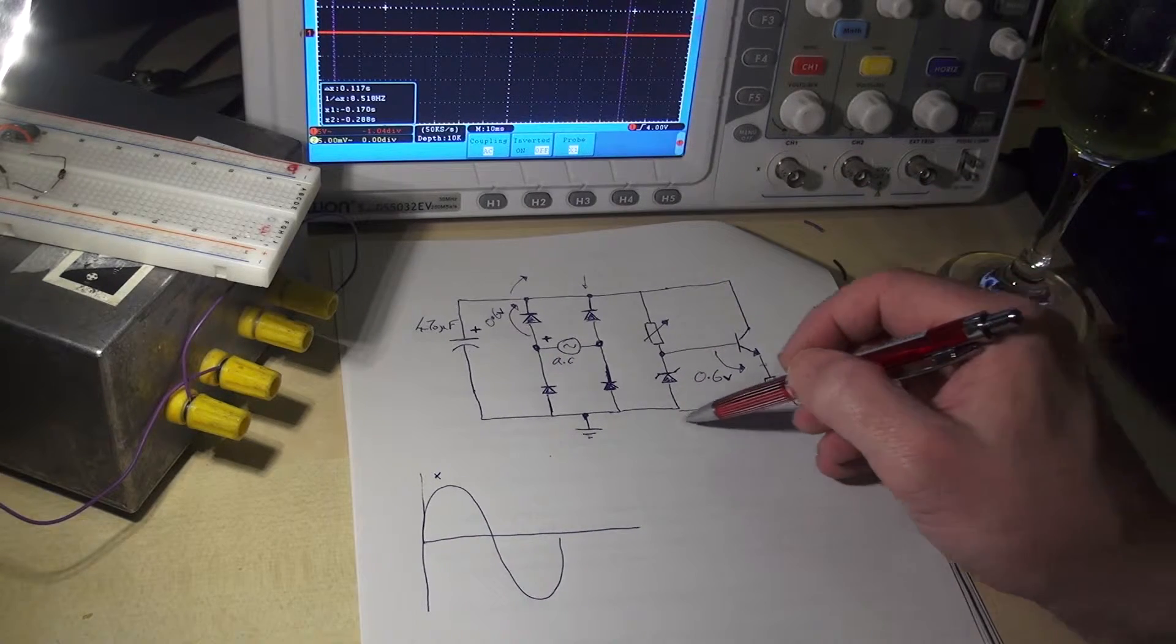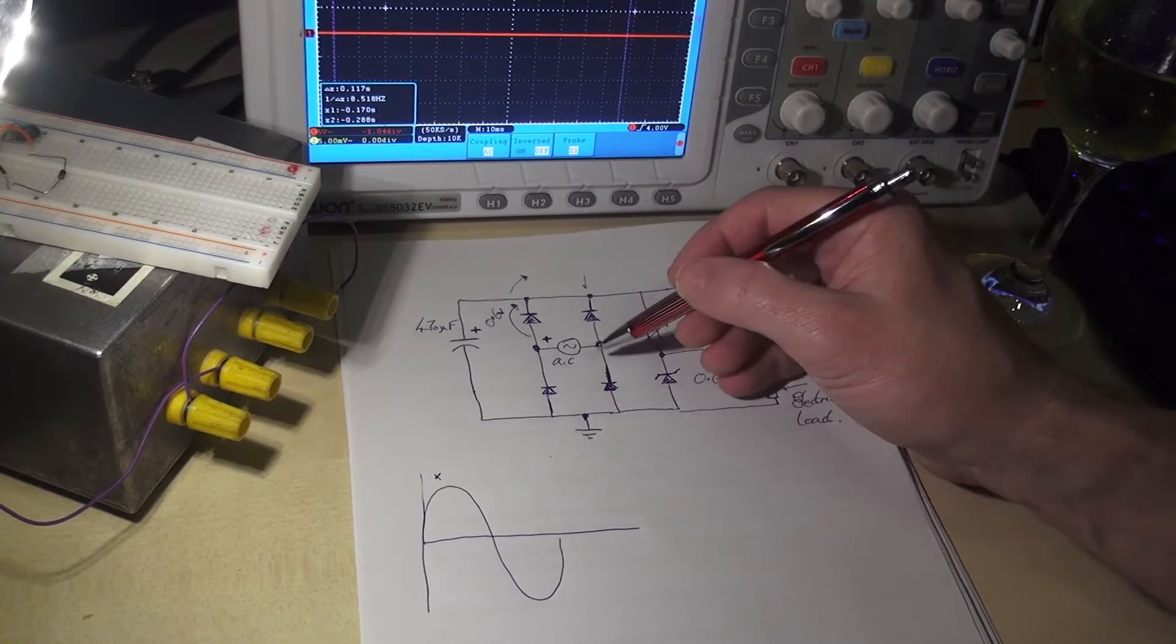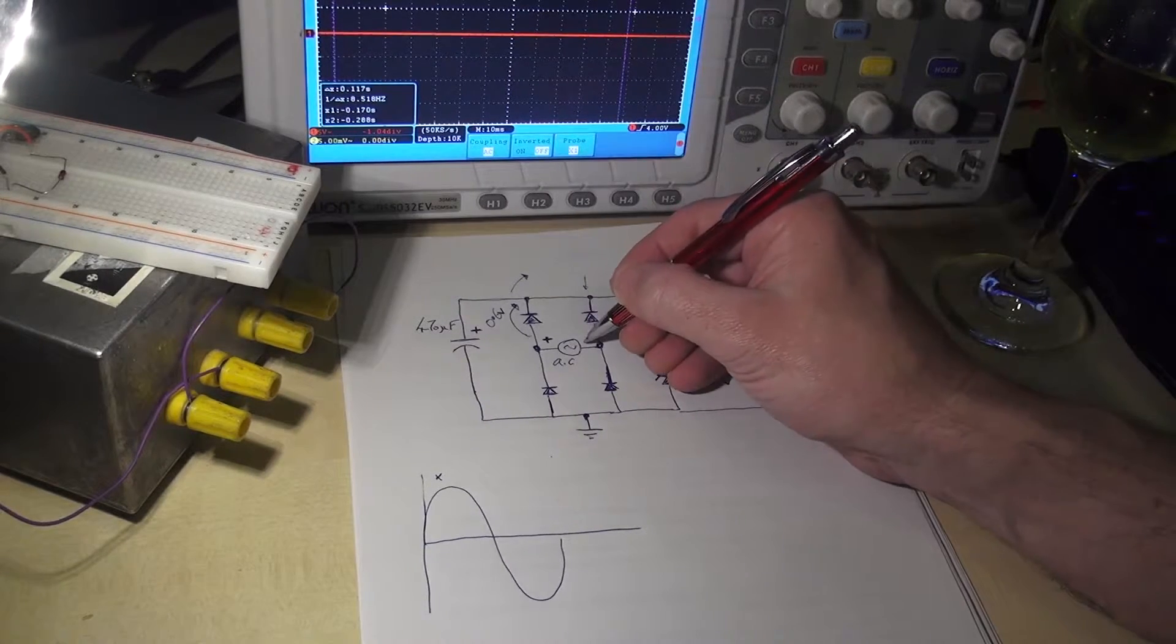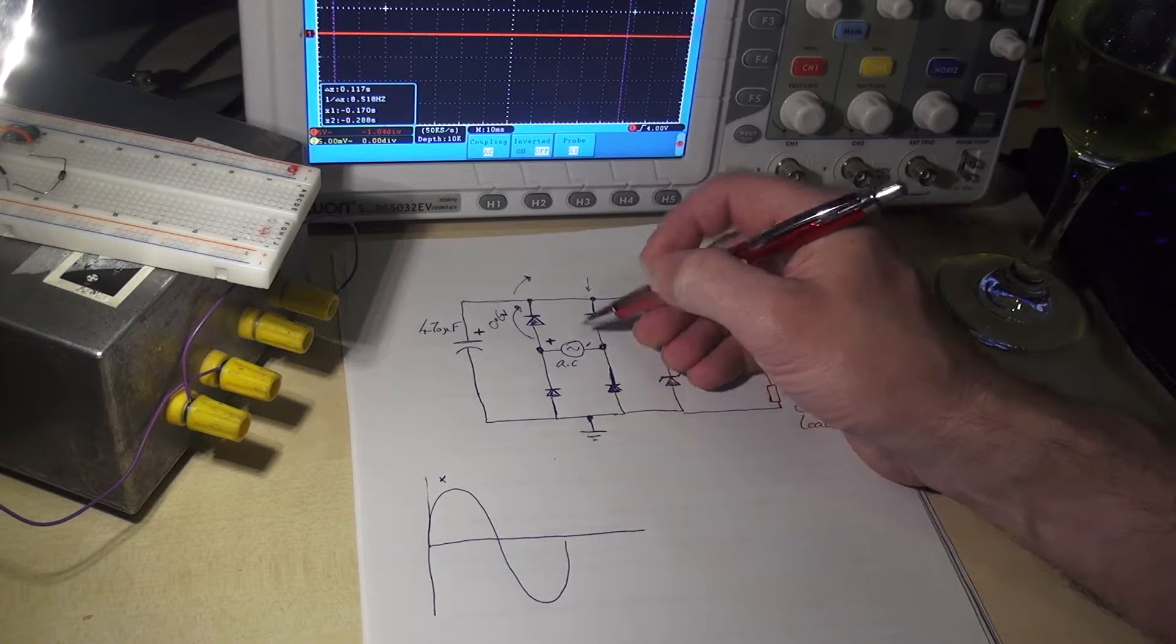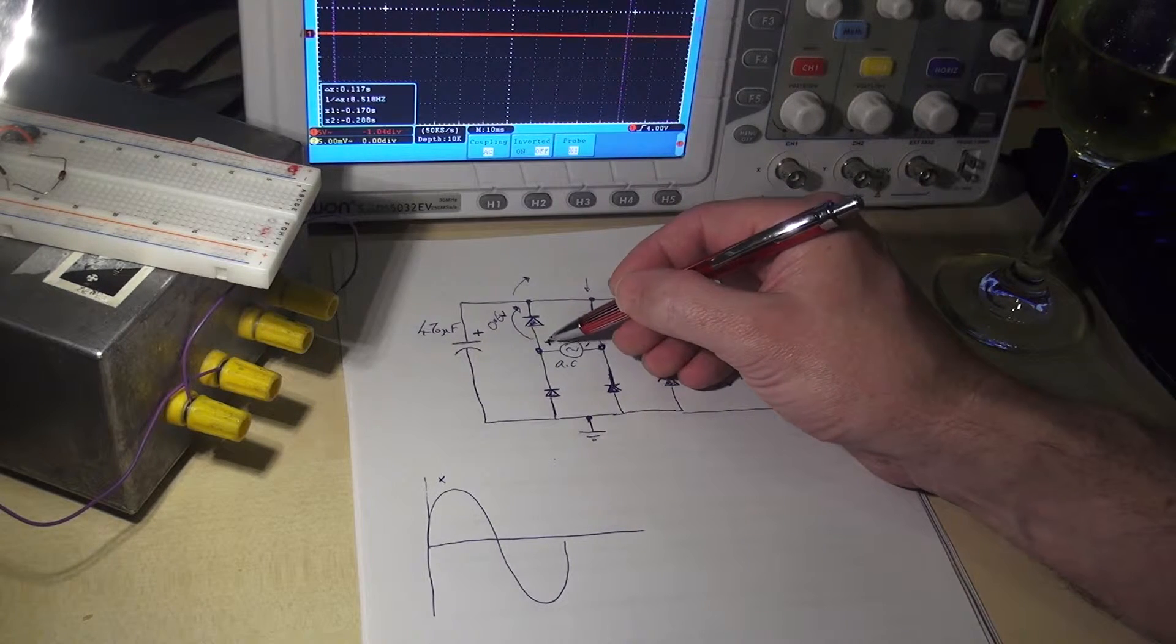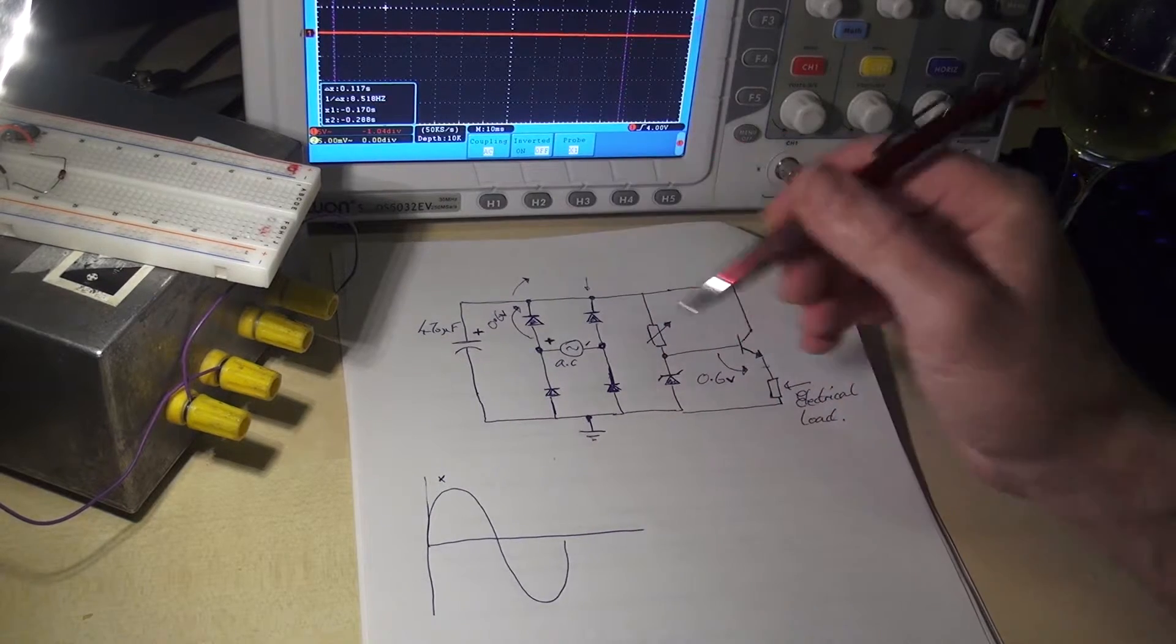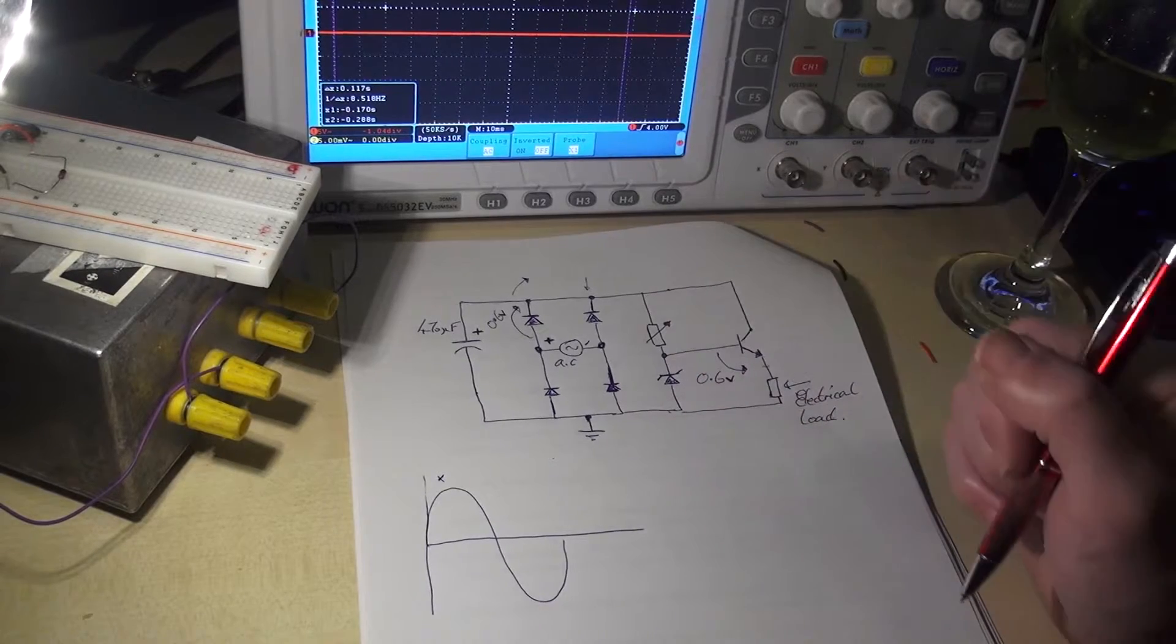When it gets to this point of the circuit here, remember the current is trying to get back to the AC supply. And therefore, if this is positive, this must be negative with respect to this terminal. This terminal must be negative with respect to this terminal.